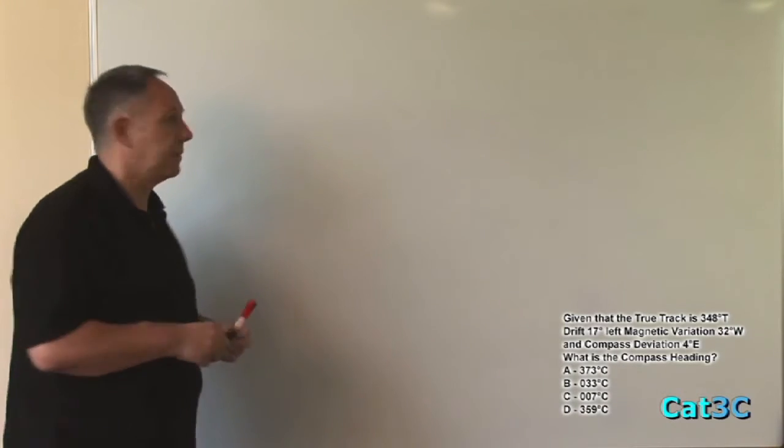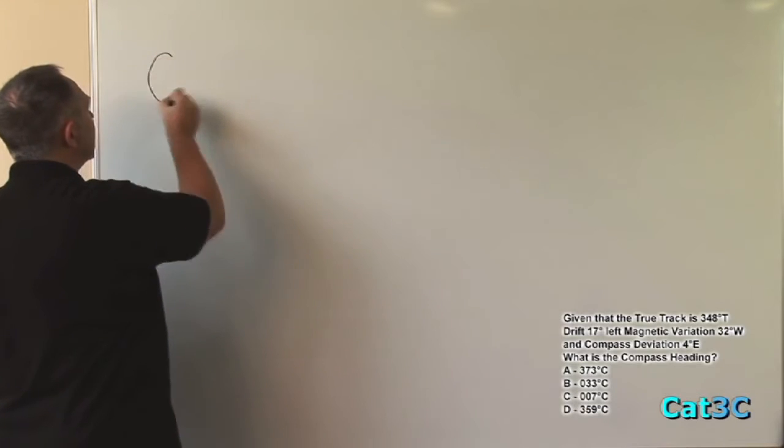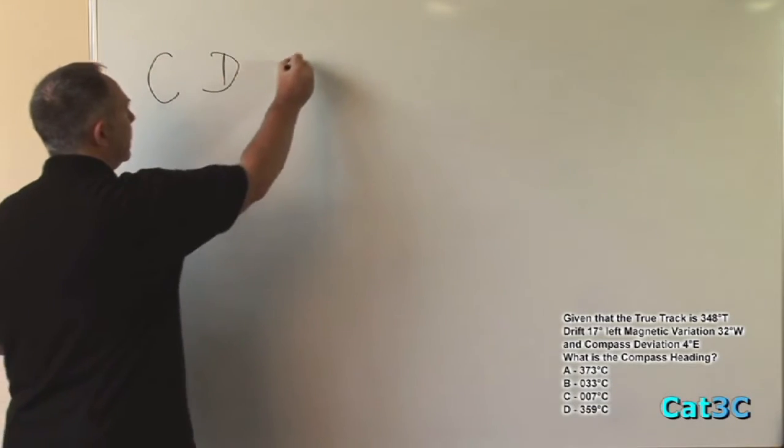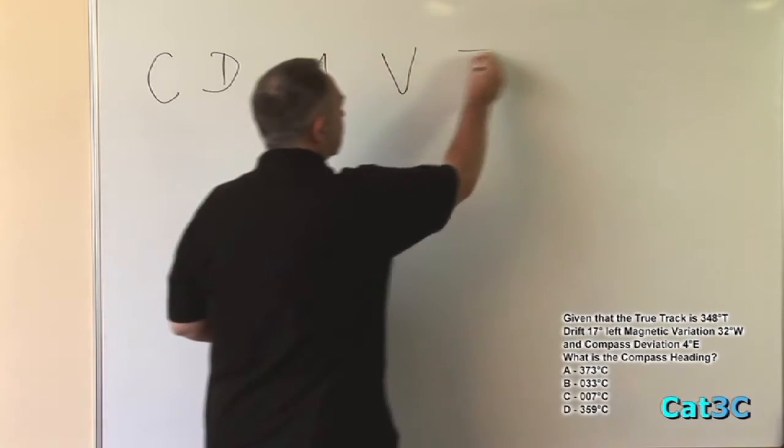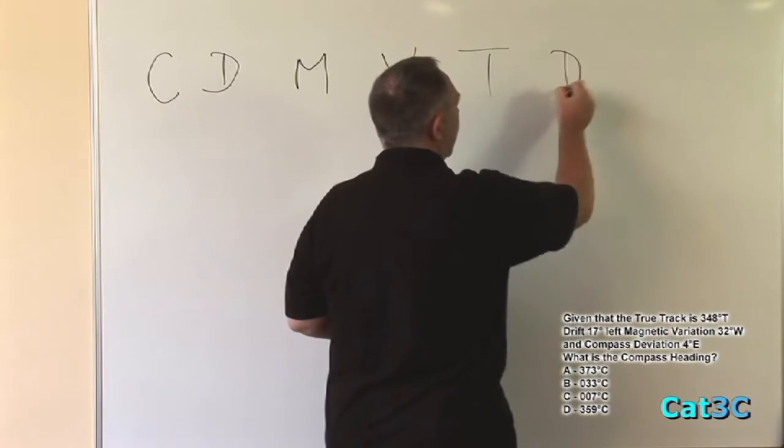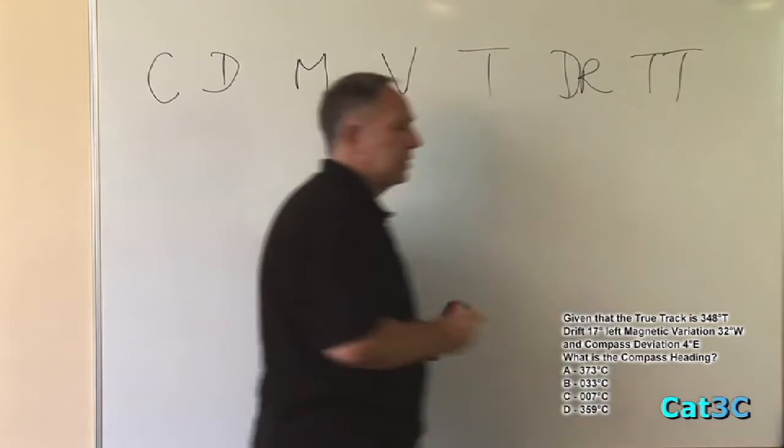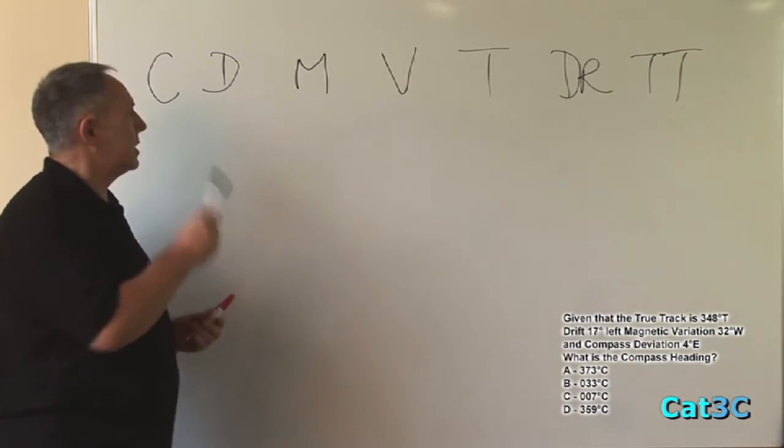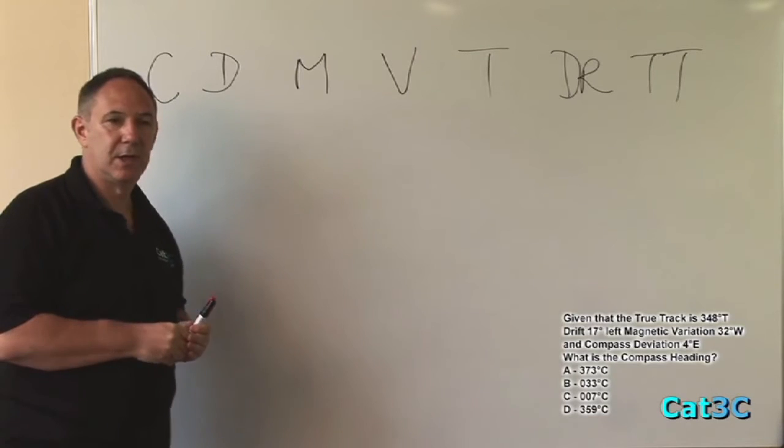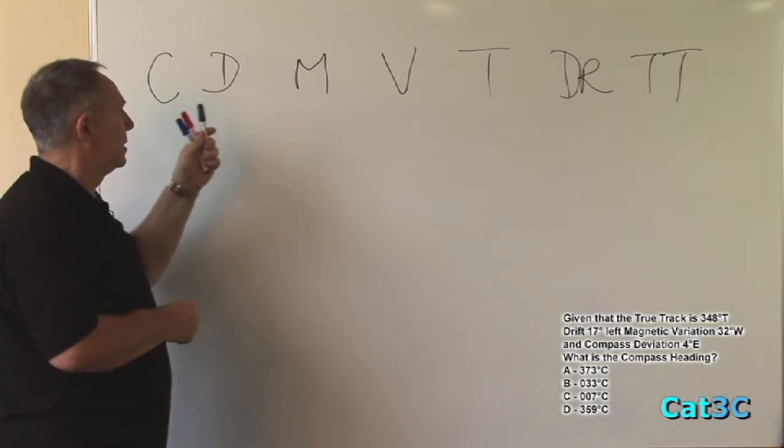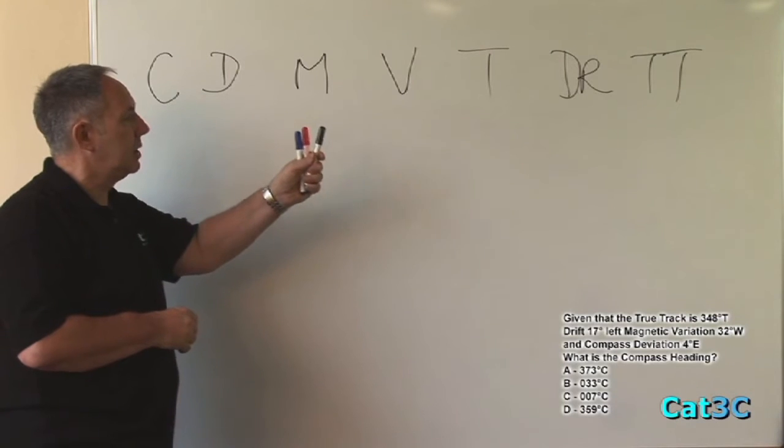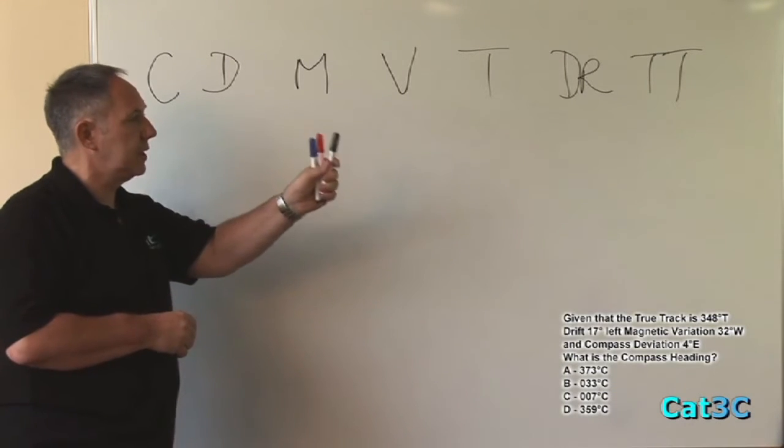Now in order to go to a compass heading from a true track, we need to apply the normal mnemonic that we've used in other examples, Cadbury's dairy milk very tasty, with a small addition. And that is, Cadbury's dairy milk very tasty when you're driving trucks. And that stands for Compass, Deviation, Magnetic, Variation, True, Drift, and True Track.